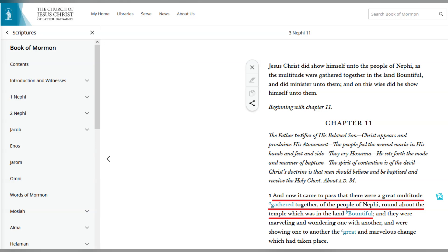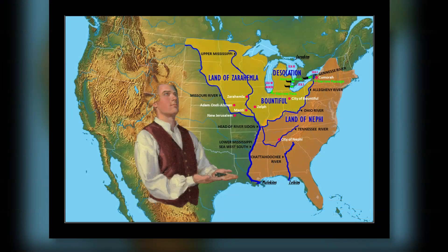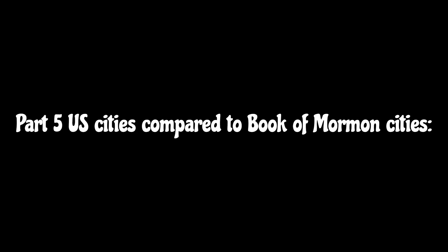LDS Apostle Marion G. Romney stated on July 4th, 1976: 'The New Jerusalem, the land Bountiful, the Garden of Eden, and Adam-ondi-Ahman are all in Missouri.' This aligns with what the Book of Mormon itself states: 'There were a great multitude gathered together of the people of Nephi round about the temple which was in the land Bountiful' (3 Nephi 11:1). Several sources around Joseph Smith, including himself, made statements placing Book of Mormon lands in the United States — Hill Cumorah, the land of Nephi, Zelf, land of Bountiful, and the Gadianton robbers all within the heartland.